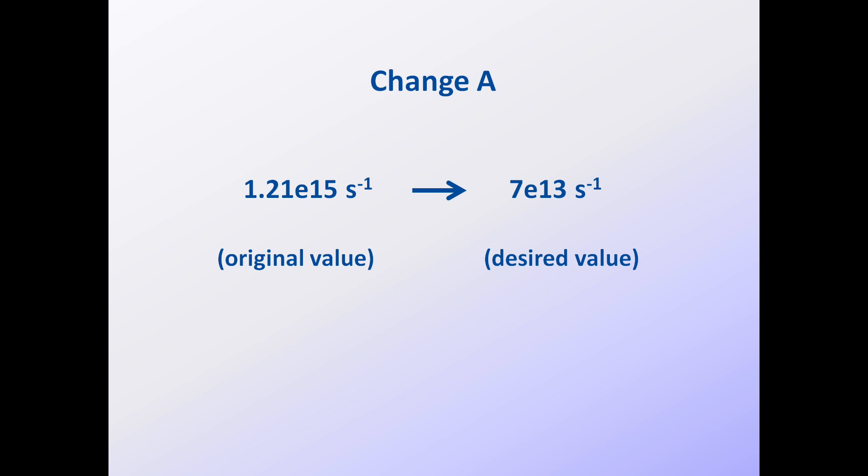And that the compensation effect will allow us to state explicitly the equivalence between the reaction rate constants determined using both A-factors. Let's take 1.21E15 as A1 and 7E13 as A2.